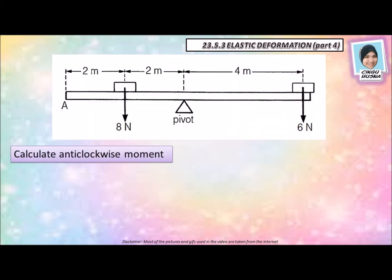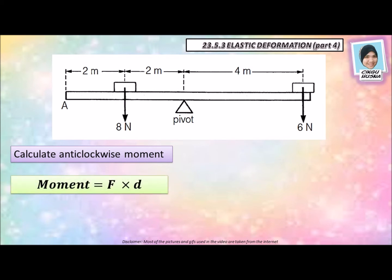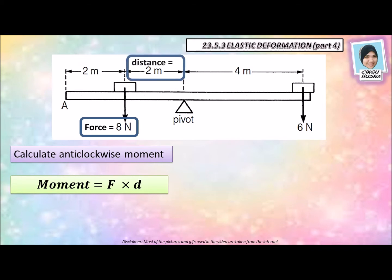Here is an example. You have to calculate the anti-clockwise moment for this diagram. The anti-clockwise moment is the weight with 8 Newton. To calculate moment, we use moment equal to force times distance. The force given is 8 Newton and the distance from 8 Newton to the pivot is 2 meters. So 8 Newton times 2 meter gives us 16 Newton meter.